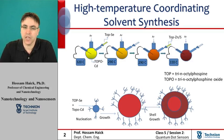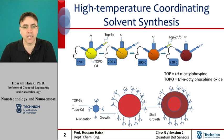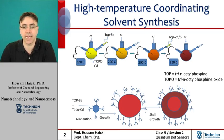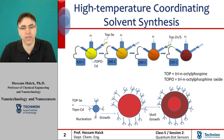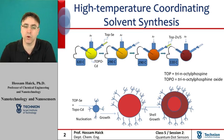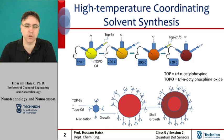The essential elements for the synthesis of quantum dots involve combining an appropriate metallic or organometallic precursor, such as zinc, cadmium, or mercury species, with a corresponding chalcogen precursor, such as sulfur, selenium, or tellurium species, in a coordinating solvent at high temperature.